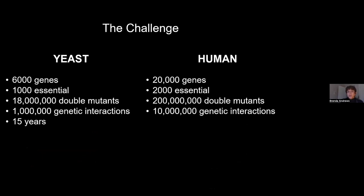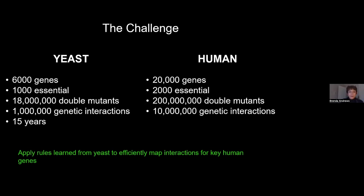The challenge here is obvious. Yeast has 6,000 genes, and we were able to explore 18 million double mutants — that took us about 15 years. Human cells have many more genes and different genetic isoforms, a substantial number of essential genes where we do not have stable hypomorphs. We can't possibly explore this many double mutants systematically the way we did in yeast. It's important that we choose what aspects of the genetic network to explore and try to efficiently build out a view of what might be happening in human cells.